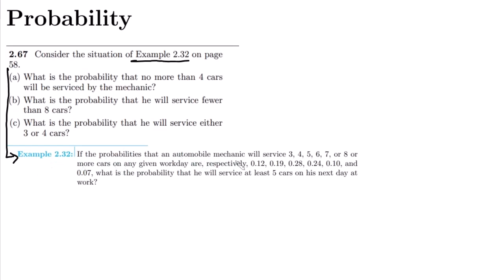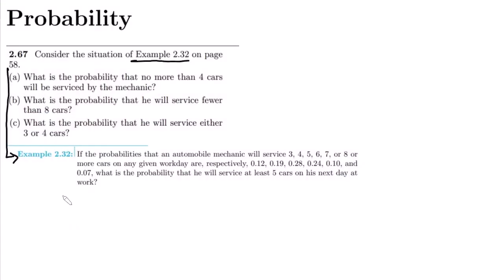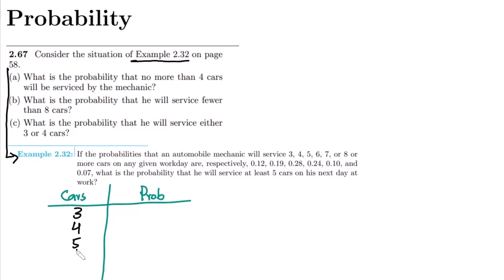The probabilities that an R2 mobile mechanic will serve 3, 4, 5, 6, 7, or 8 or more cars on any given workday are respectively 0.12, 0.19, 0.28, 0.24, 0.10, and 0.07. Let me first write the number of cars and their respective probabilities here.